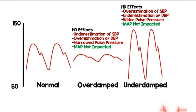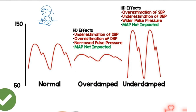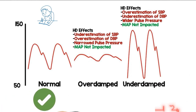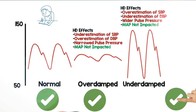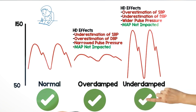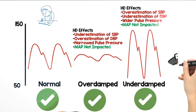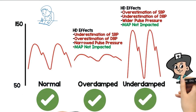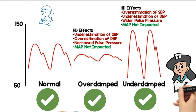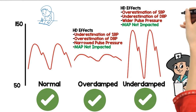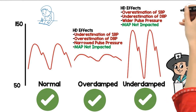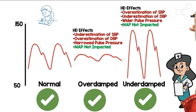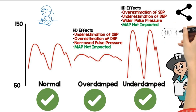Here are all three different types of waveforms put together: you have normal on the left, over-damped in the middle, and under-damped on the right. It's important to know which one of these you have going on because it will determine what we're doing for our patients. I hope you found this helpful — over and under damping and normal. Thank you, share and subscribe.